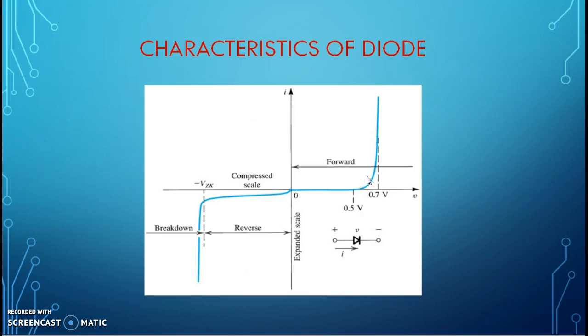Thus, it carries current safely only in one direction, that is forward bias, and it won't allow the current to flow safely in reverse bias condition. Thus, it works only in one direction, that is, diode is a unidirectional device.